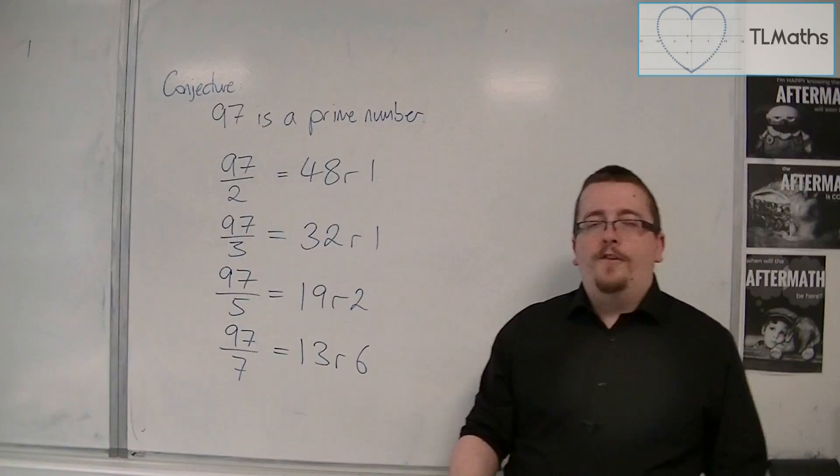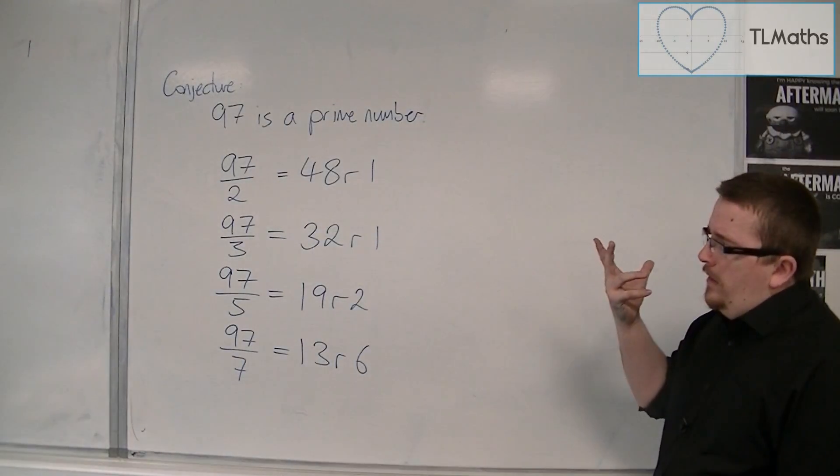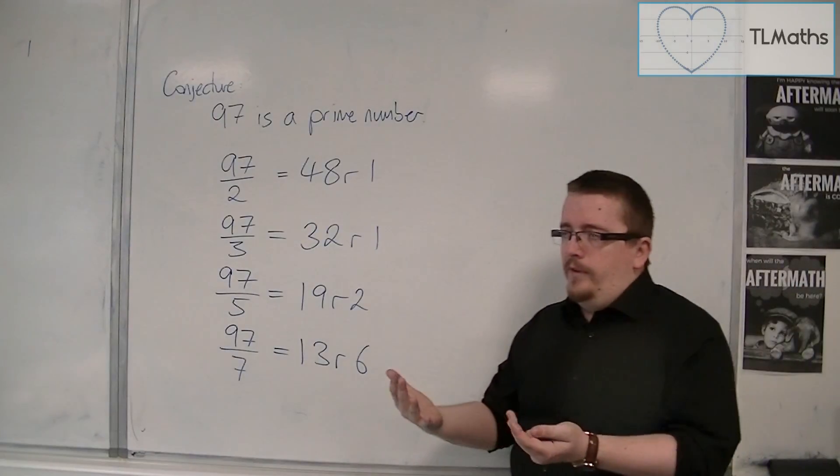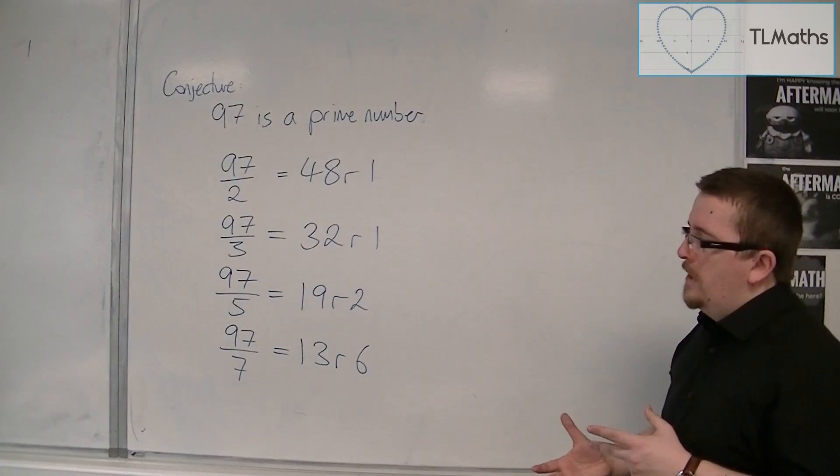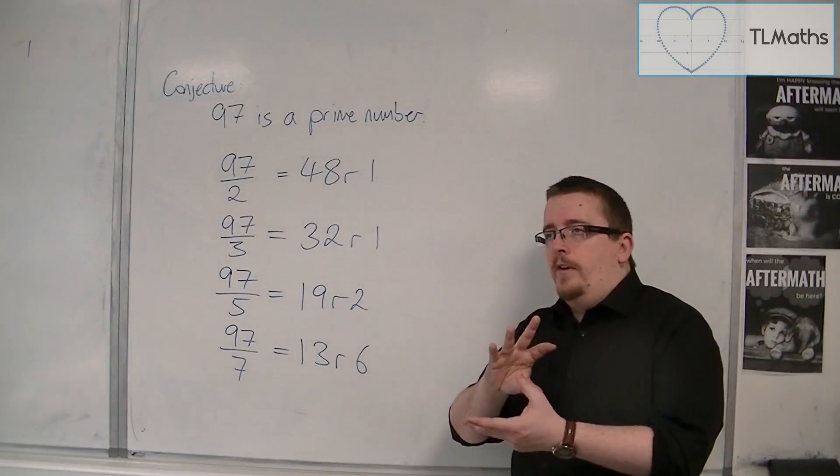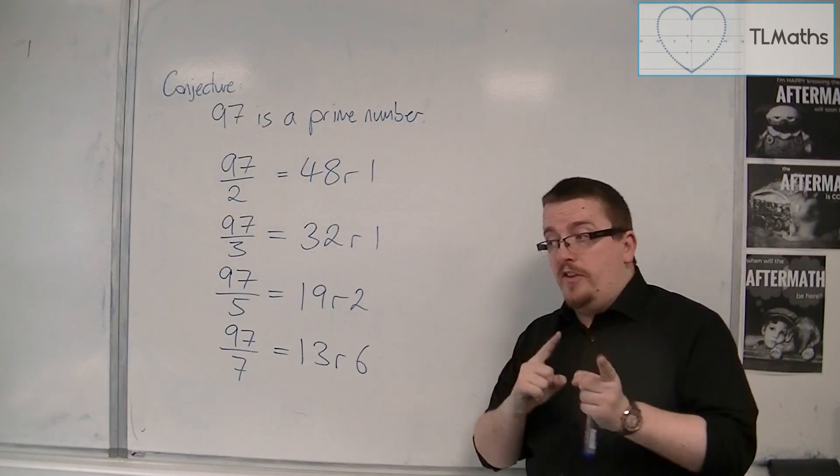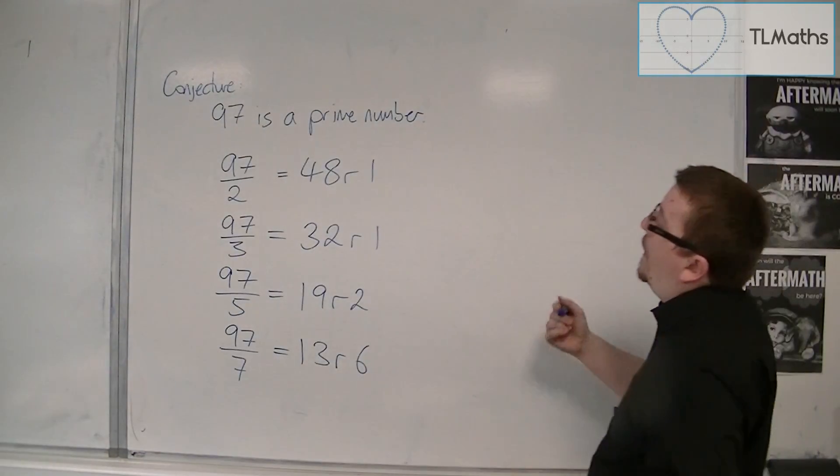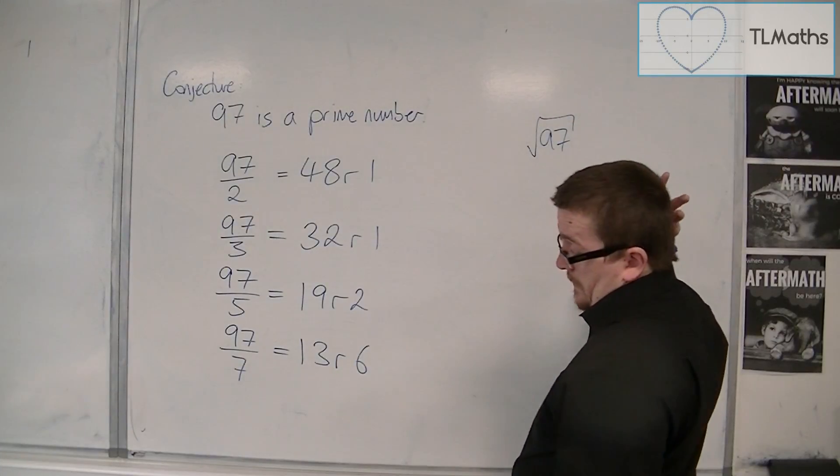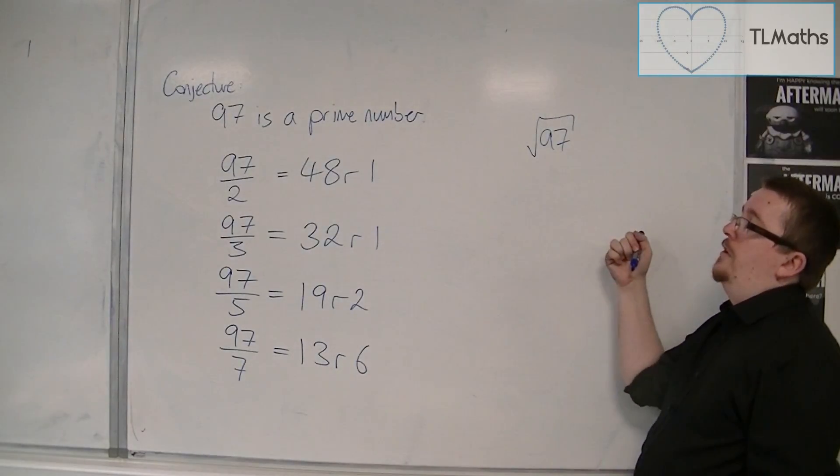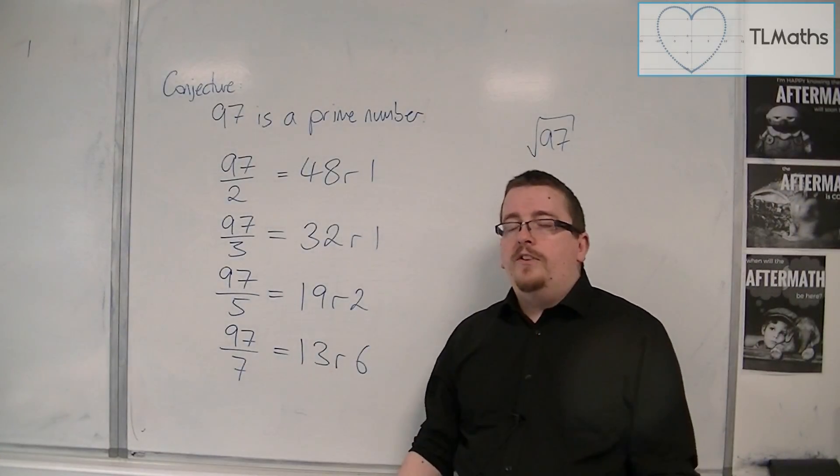Well, if there were two numbers that multiplied together to make 97, then the pair of numbers must be either side of the square root of 97. One must be larger and one must be smaller unless they're actually equal or they're both equal to the root 97.